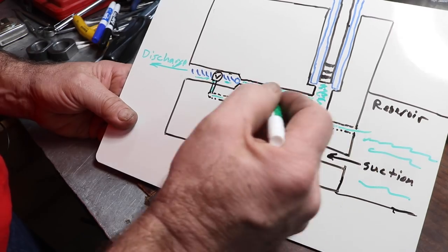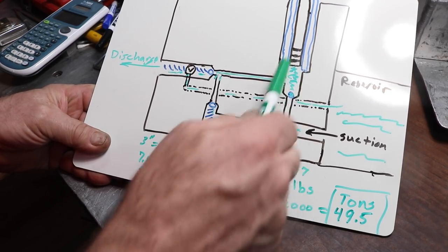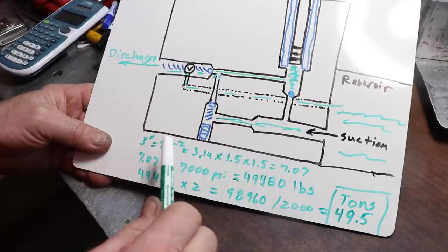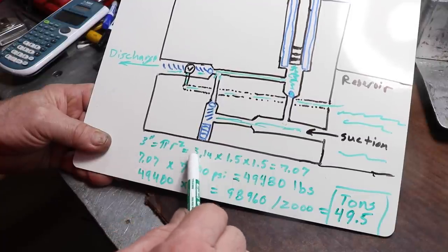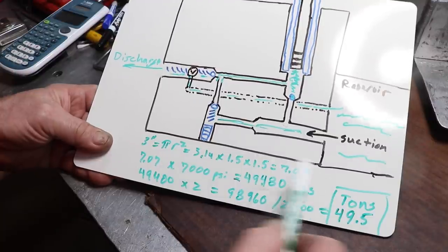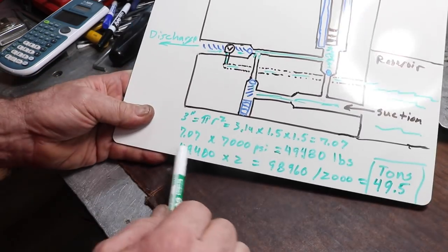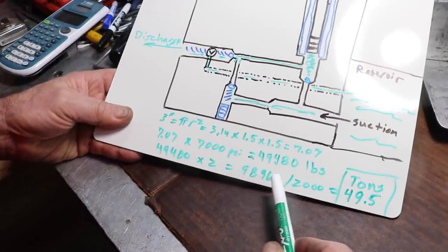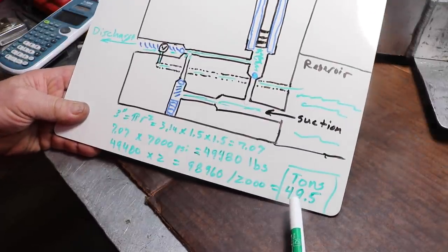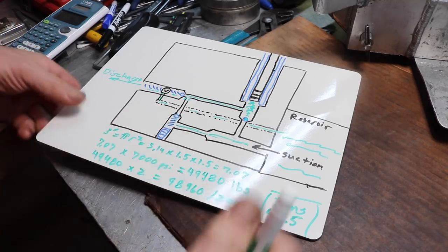I worked out the math for you, if you're interested. So, if we could develop 7,000 pounds inside the jack. The pistons are, I think, three inches. So, pi r squared for the area, 3.14 pi. So pi times 1.5 times 1.5, the radius of the piston, gives me 7.07 square inches, times 7,000 psi, that's 49,480 pounds. And then, times 2, it's two jacks together. So, it's 99,896 pounds that I can push, divided by 2,000 for tons. And that comes out to 49.5 tons we should be able to lift, theoretically, with the two jacks.